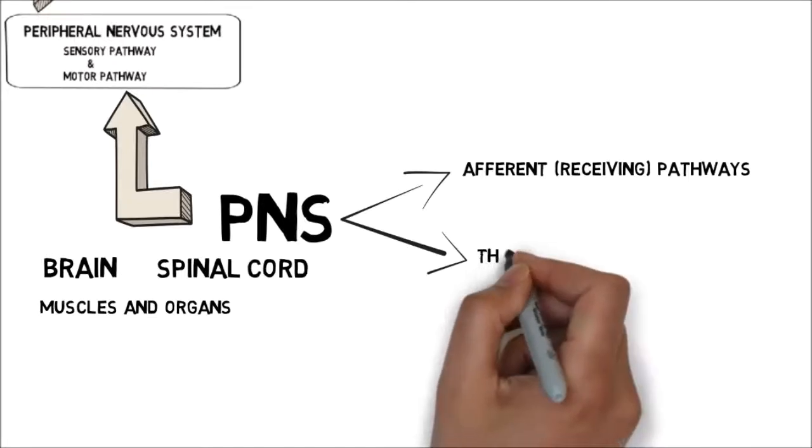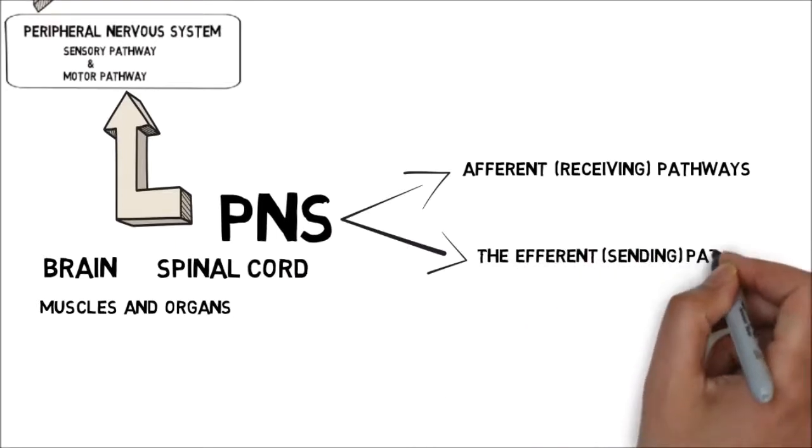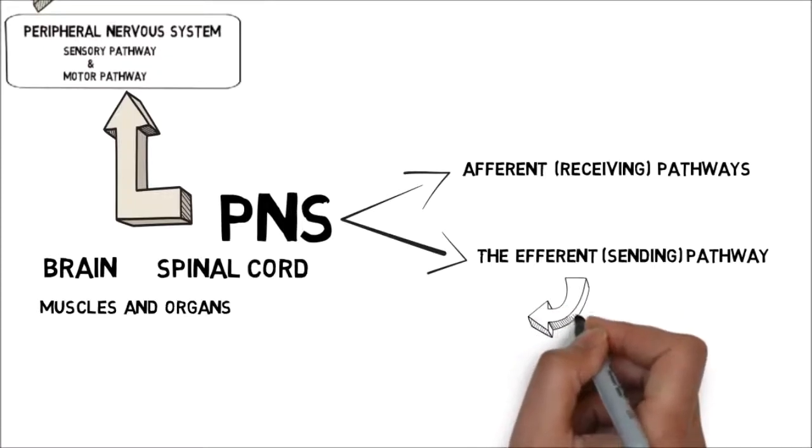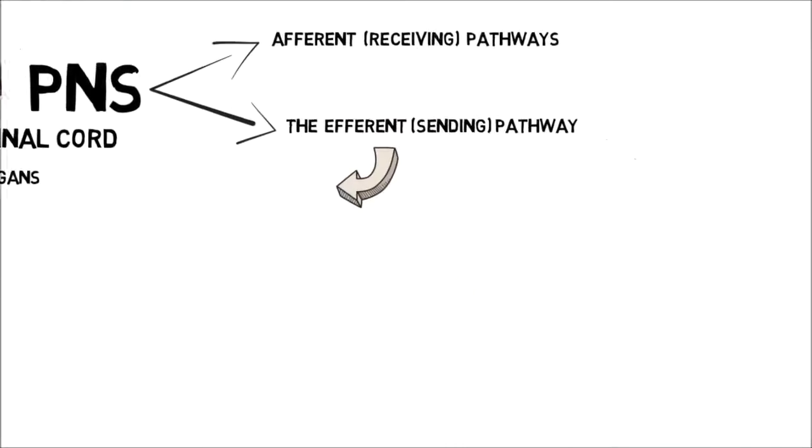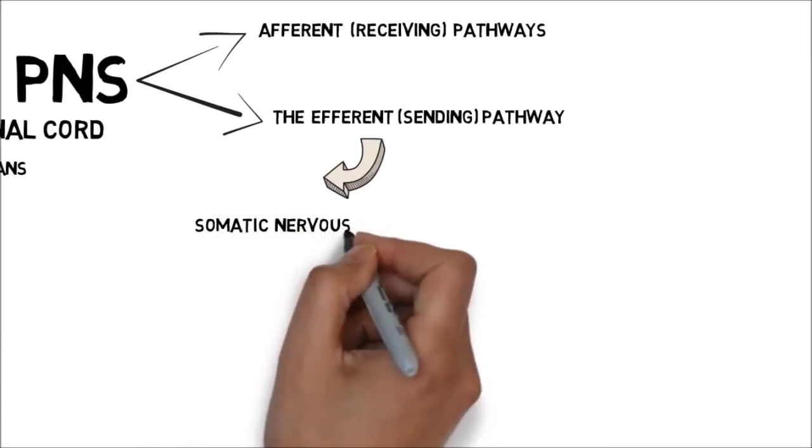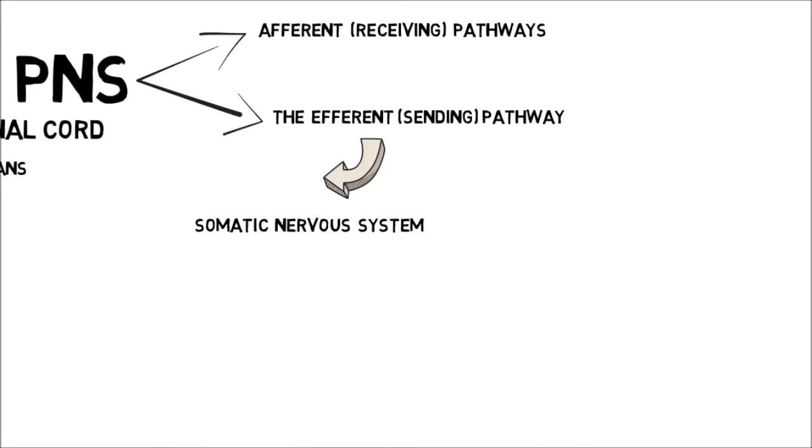The second one, that is the efferent, also known as sending pathway, may be subdivided into somatic and autonomic nervous systems. The somatic nervous system controls the voluntary muscles. It includes most cranial nerves as well as the motor nerve fibers of the spinal nerves. Both these convey messages from the central nervous system to the voluntary muscles.